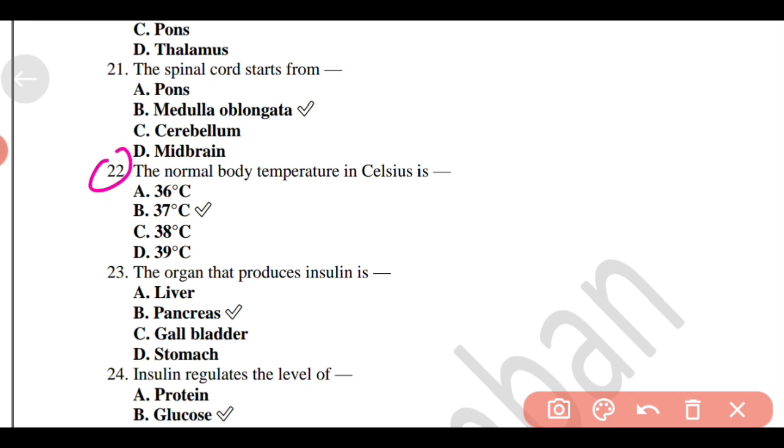The normal body temperature in Celsius is Option B, 37 degrees Celsius.